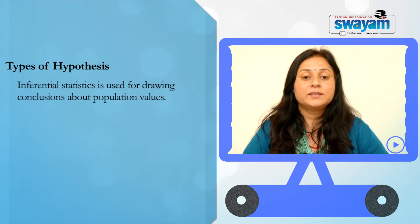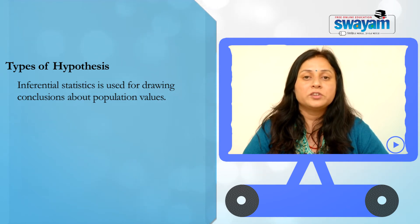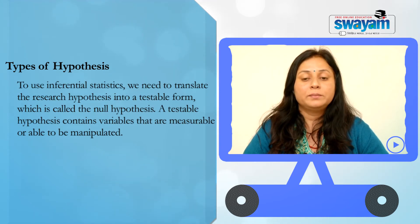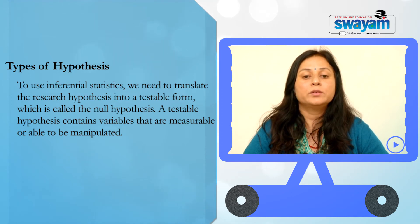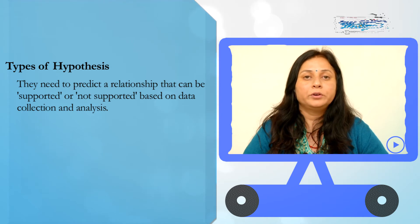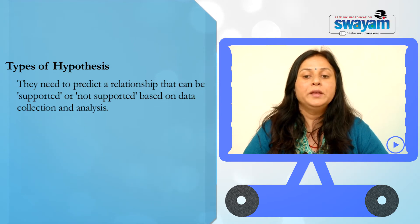We need to understand what inferential statistics is. Inferential statistics is used for drawing conclusions about population values. To use inferential statistics, we need to translate the research hypothesis into a testable form, which is called the null hypothesis. A testable hypothesis contains variables that are measurable or able to be manipulated, and they need to predict a relationship that can be supported or not supported based on data collection and analysis.